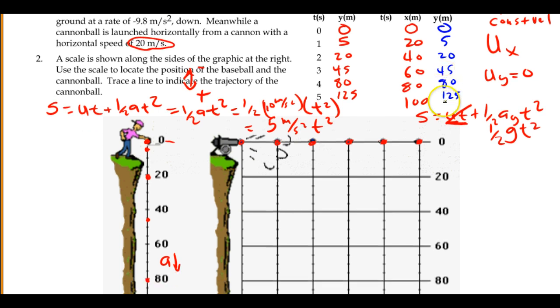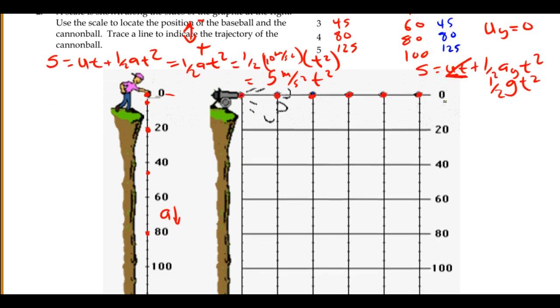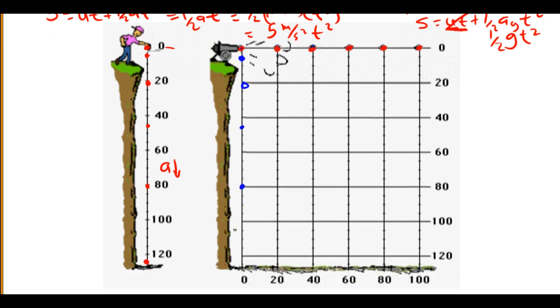So if I plot those on this vertical axis here, here's 5, here's 20, here's 45, here's 80, and then here's 125.